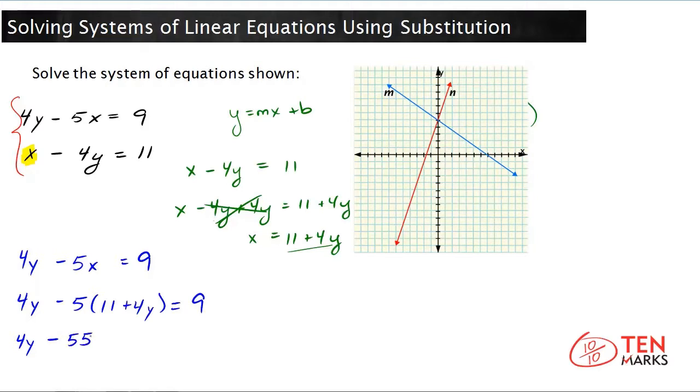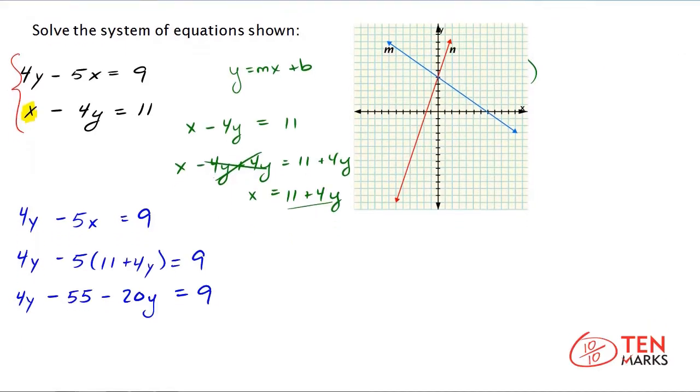And then multiply by 4y for negative 20y equals 9. Now you can continue solving by combining like terms.